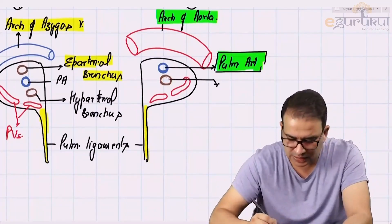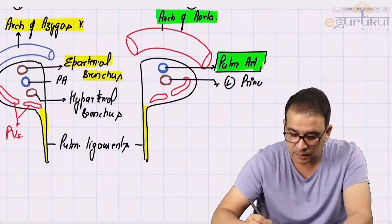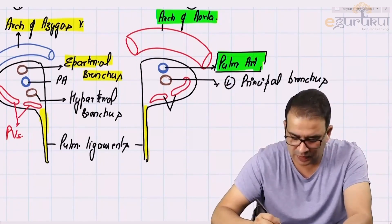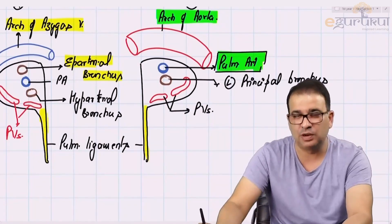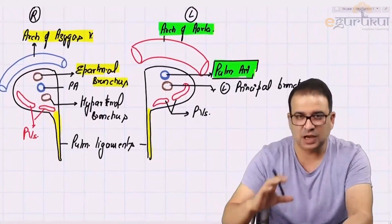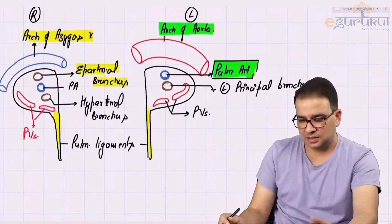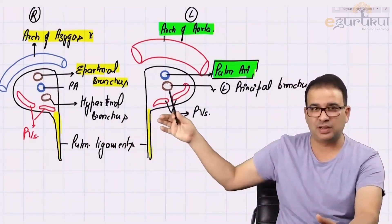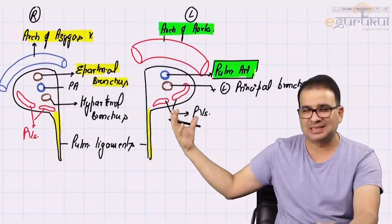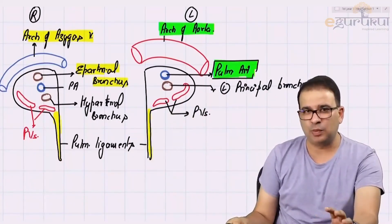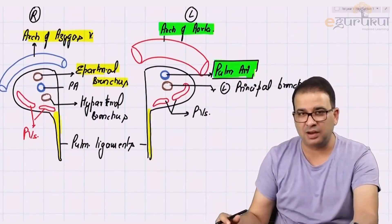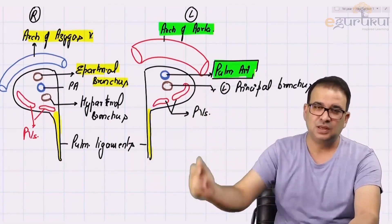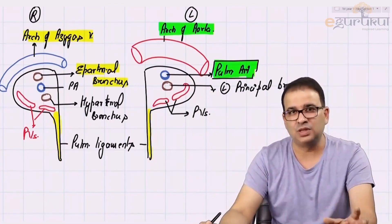The remaining structures in the left root include the left principal bronchus and the left pulmonary veins. This is how the structures are organized in the right and the left root of the lung. There are other minor structures as well — like bronchial arteries: one right bronchial artery but two left bronchial arteries — along with some lymphatics and nerve plexus. What is important to remember is how the major structures — the main artery, the bronchus, and the veins — are organized inside the hilum, and which structures lie above the hilum of the lung.